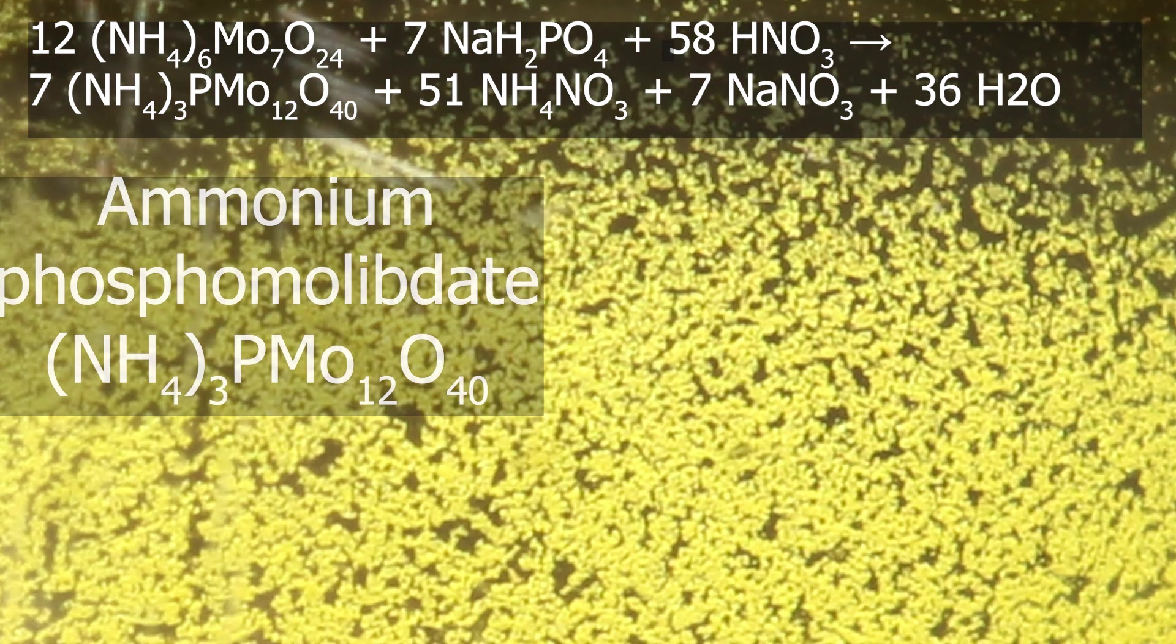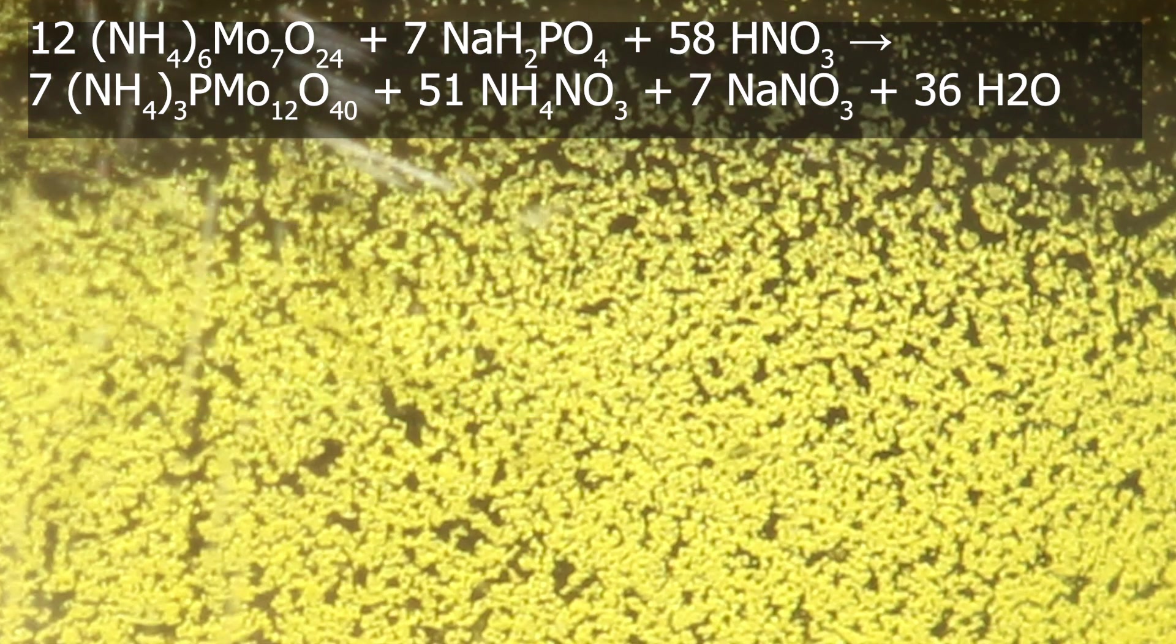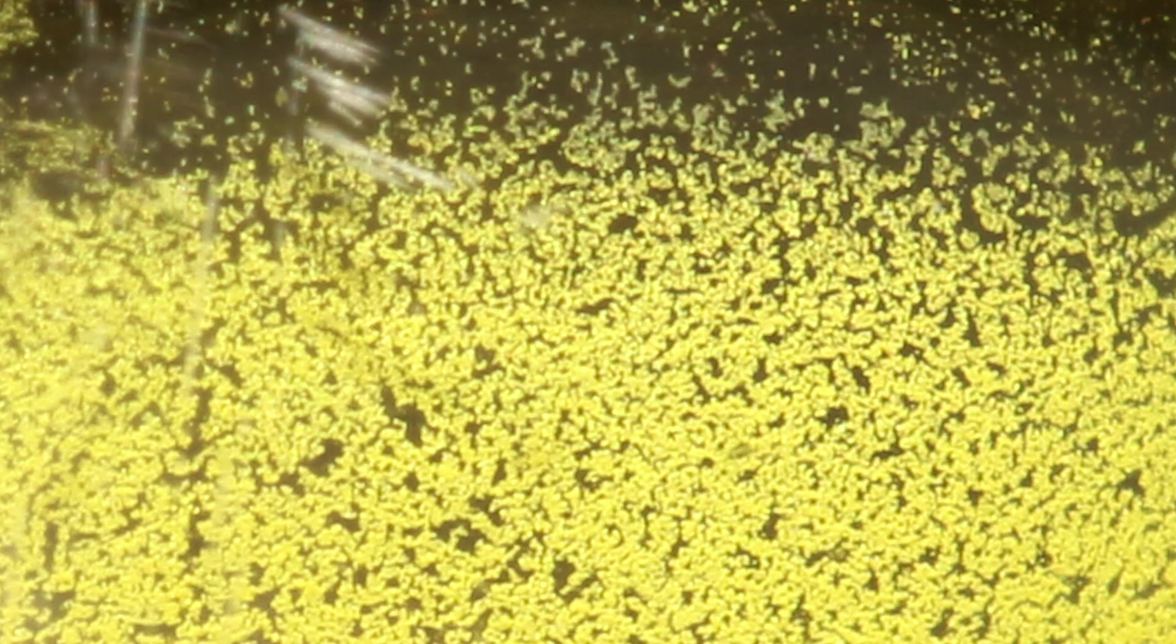And remember the test for phosphates. First add concentrated nitric acid to the solution. Then ammonium molybdate. And heat it up. And observe the appearance of bright yellow precipitate.